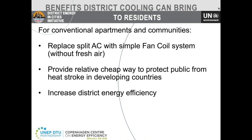There is also a lot of focus nowadays in India and China on conventional apartments and communities because of last summer's heat waves. The basic idea for this cooling system for conventional buildings is to provide cold air to help public health and prevent heat stroke. This approach replaces split ACs directly with a simple fan coil system without fresh air. One benefit is that it provides a relatively cheap way to solve the cooling problem in developing countries, while also bringing increased district energy efficiency. Fan coils installed in bedrooms can be turned on whenever needed, providing cooling to prevent heat stroke during heat wave days — suitable for middle-class or social housing apartments.